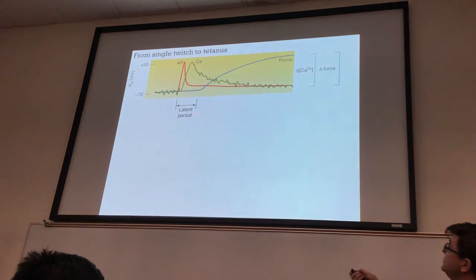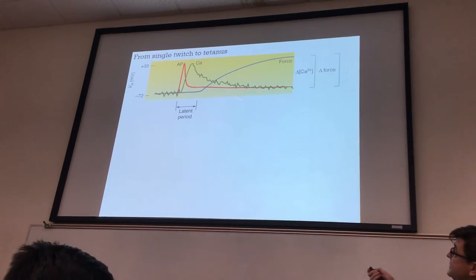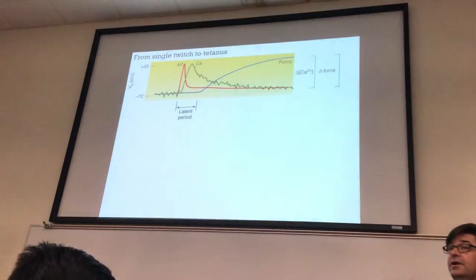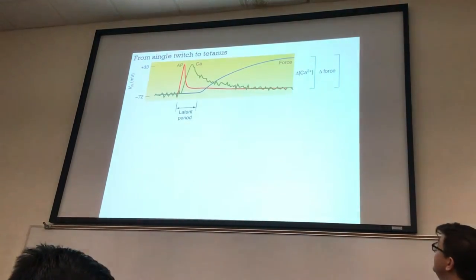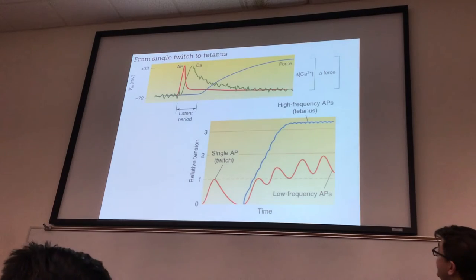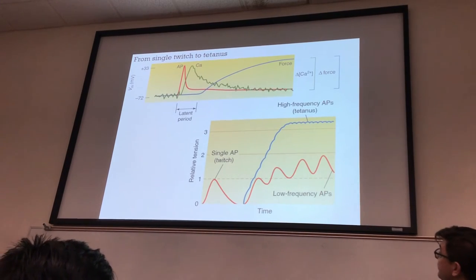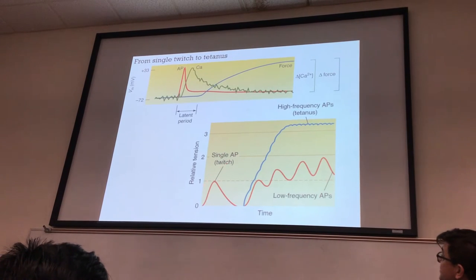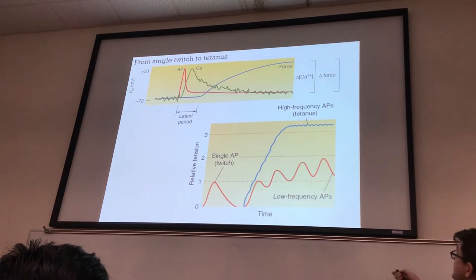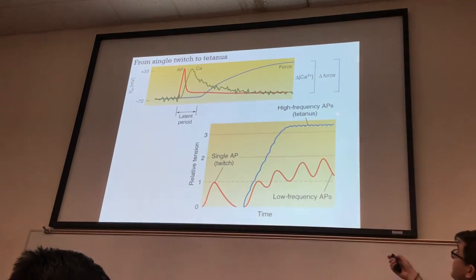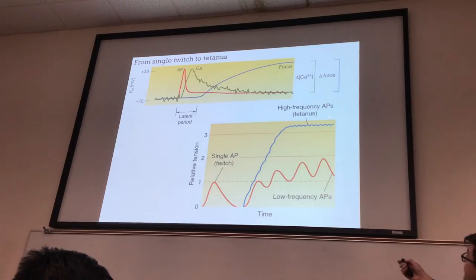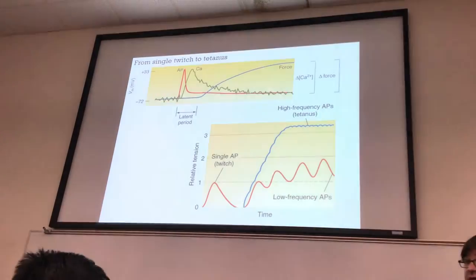This latent period occurs for sonic muscles, white muscles, and red muscles. At some point, with relative tension, when we send a single action potential, we get a twitch. Low frequency action potentials give us just that. But at very, very high frequencies, you reach tetanus.